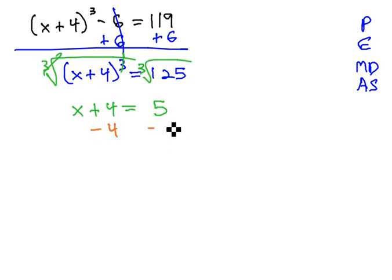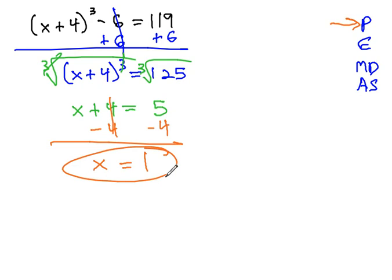Finish isolating x by subtracting the 4. This is working inside the parentheses from the problem. That should be the last thing we do to give us x equals 1, and that completes our problem.